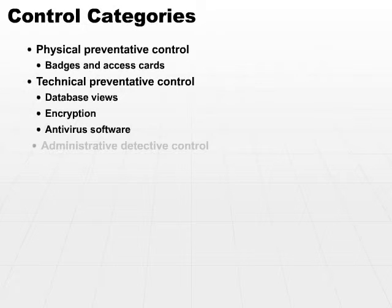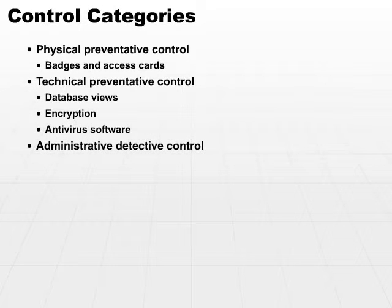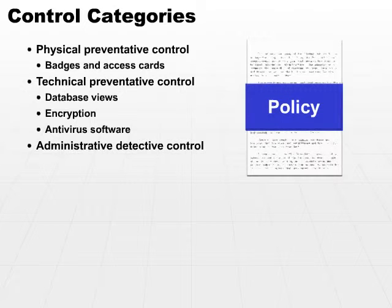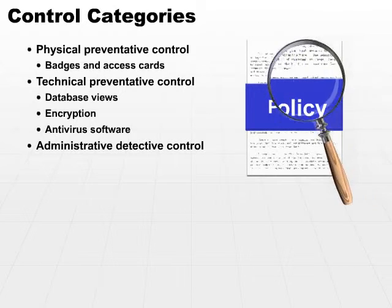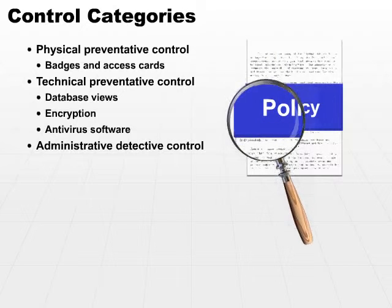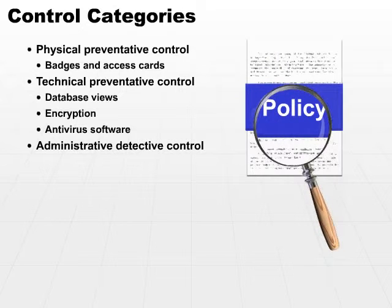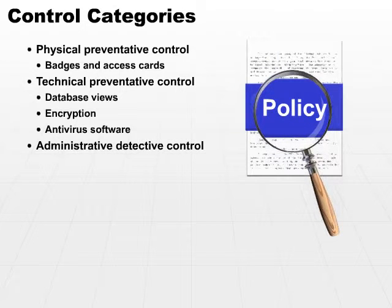We can also look at administrative detective controls. We're moving away from preventative and looking at detective controls. Administrative means it's going to be a policy or a rule of some sort. Detective controls — remember what that means? It means to detect, or to let us know that an event has occurred.